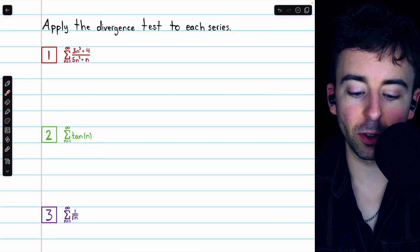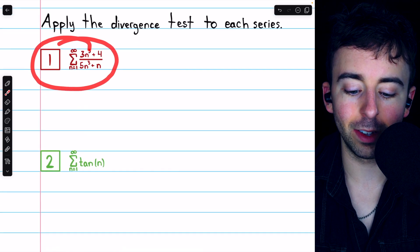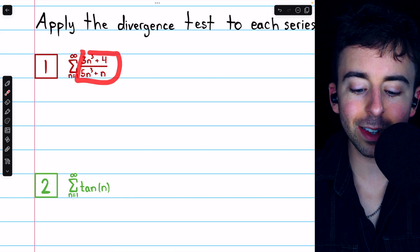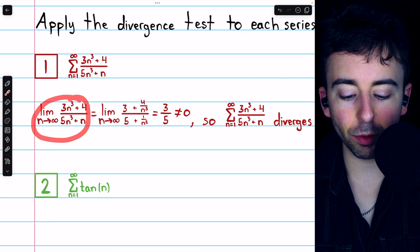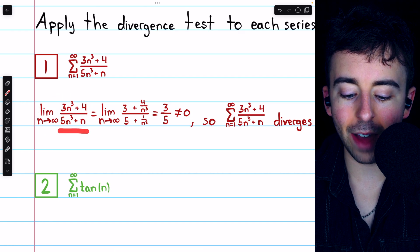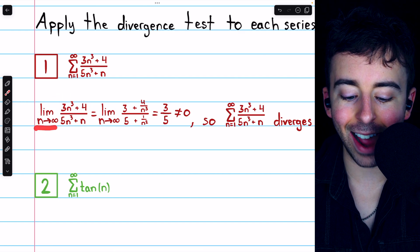Let's try applying the divergence test to this first series. So we're going to look at the terms of the series and ask, do they approach zero? So we're looking at the limit of 3n cubed plus 4 over 5n cubed plus n as n goes to infinity.